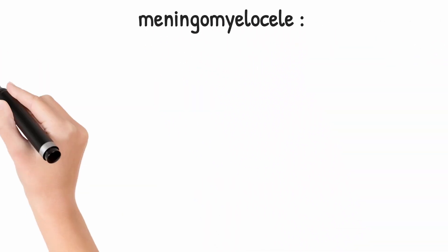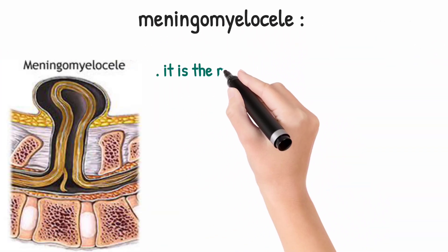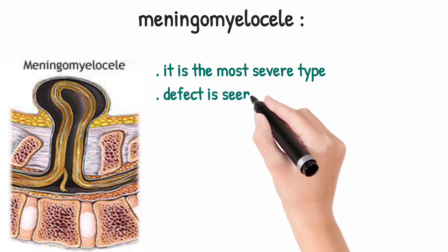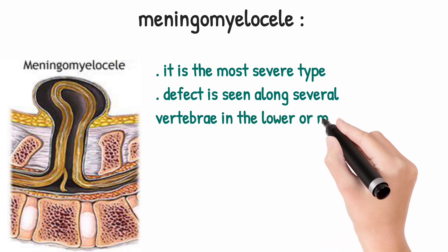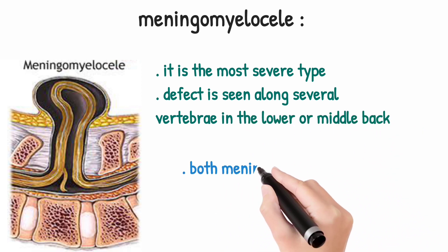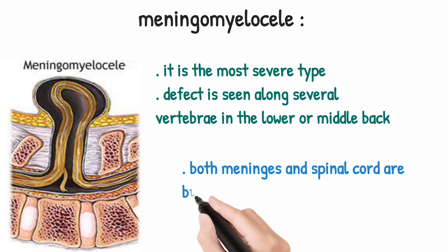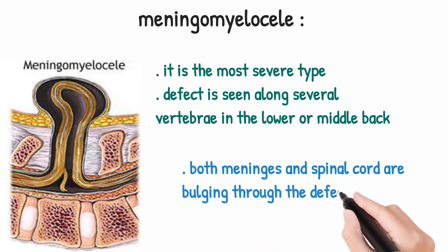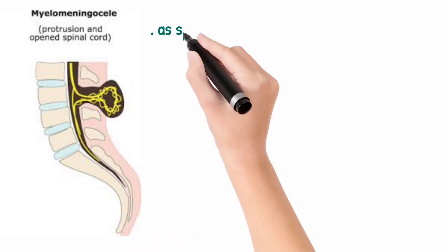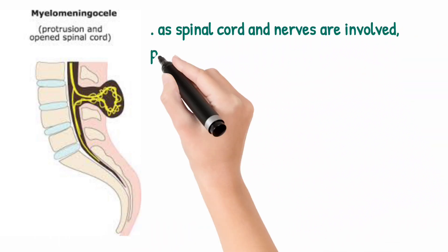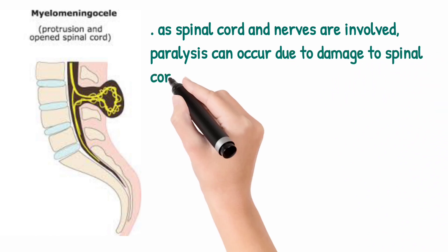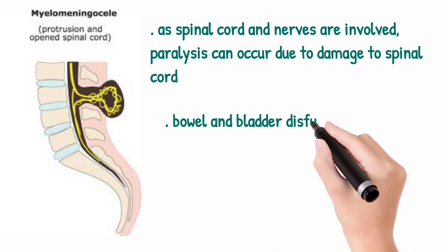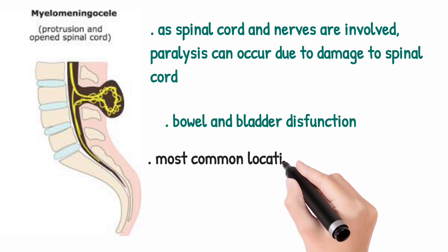Next is meningomyelocel. Here, along with the meninges, the spinal cord and nerve roots are also bulging through the defect. As the spinal cord and nerves are involved, paralysis can occur due to damage to the spinal cord. Bowel and bladder dysfunction are also present.